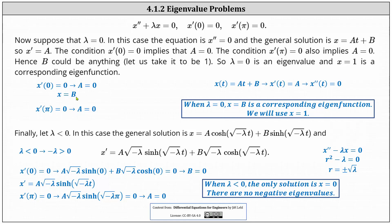So now we know b can be any real number. Lambda equals 0 is an eigenvalue, and x equals 1 is a corresponding eigenfunction. When lambda equals 0, x equals b is a corresponding eigenfunction where b is any real number; we let b equal 1 and use x equals 1 as the corresponding eigenfunction.